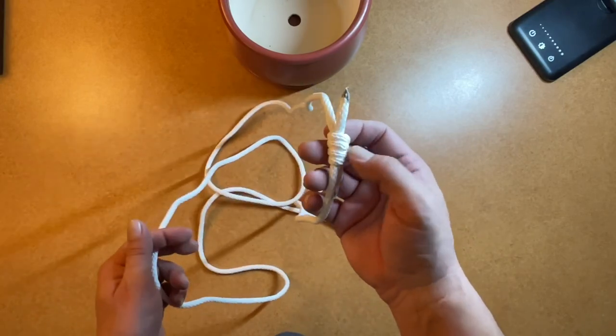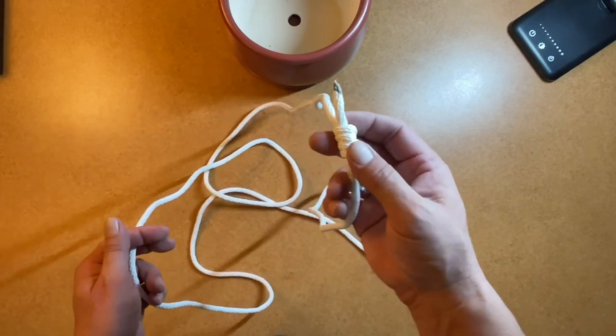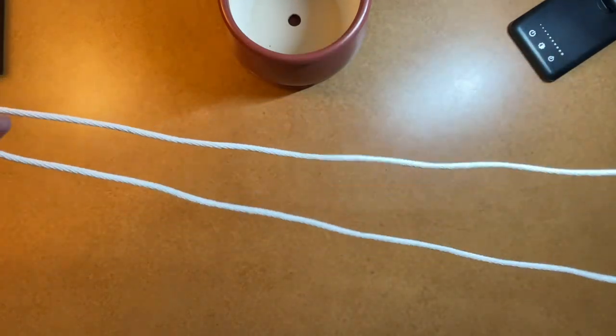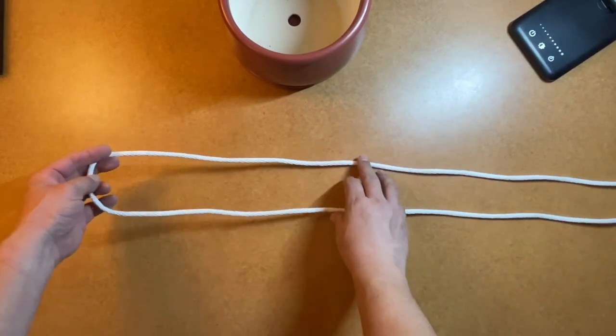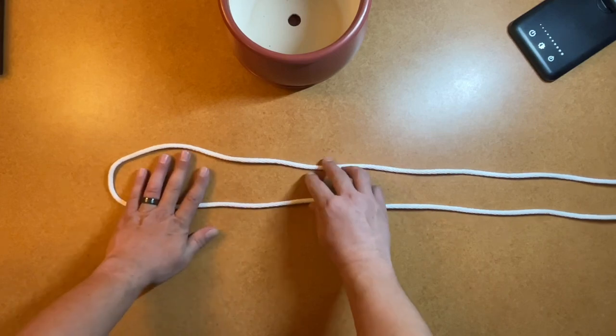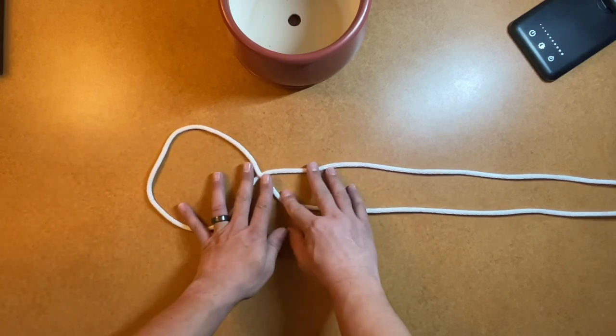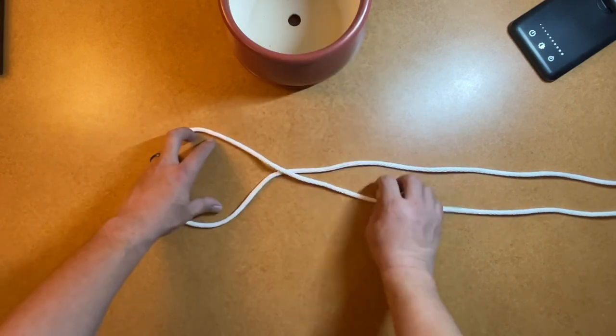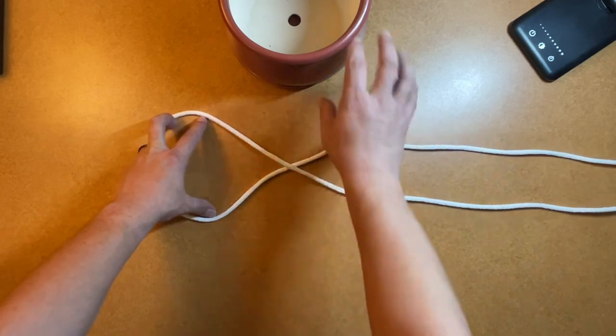To start, we're going to take the portion that has our double fisherman's and extend it out to find the center of the other side. Then we'll lay this out on the table and create a single twist in this rope, then set our pot on top of that twist.